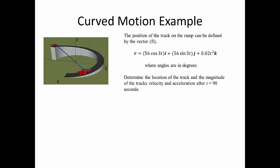Let's look at a curved motion example. A truck is traveling up a circular ramp. The position of the truck on the ramp is defined by the vector r equal to 56·cos(3t)·i plus 56·sin(3t)·j plus 0.02t²·k, in feet, where the angles are in degrees. We want to determine the truck's location and the magnitude of its velocity and acceleration after 90 seconds.